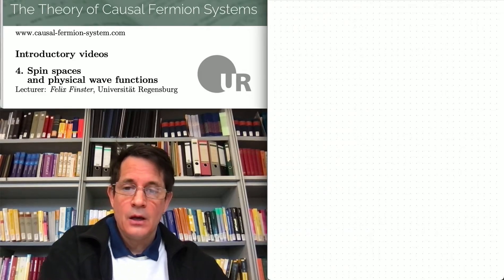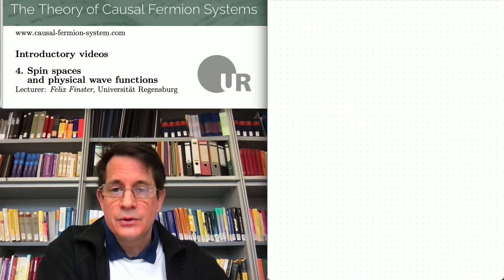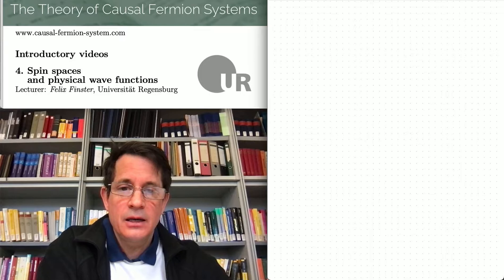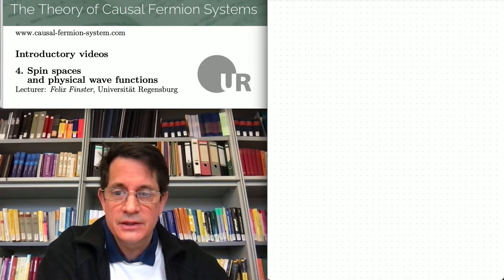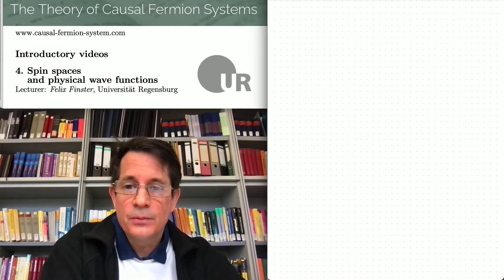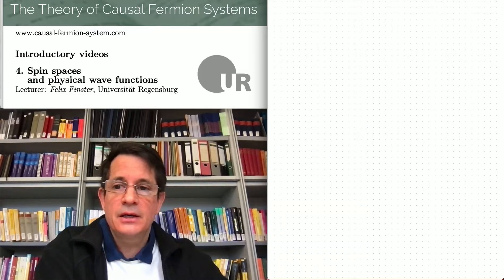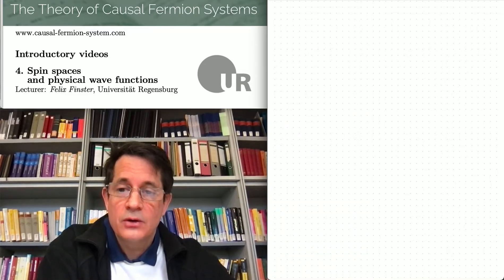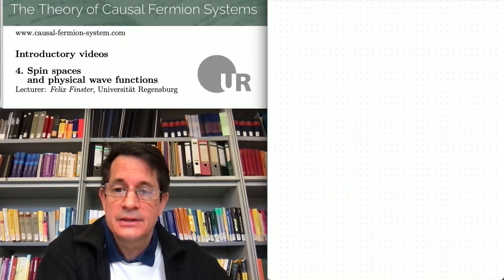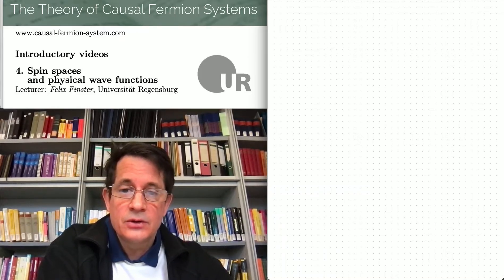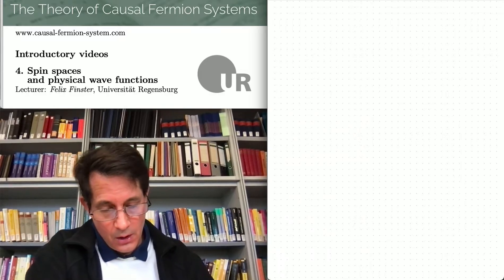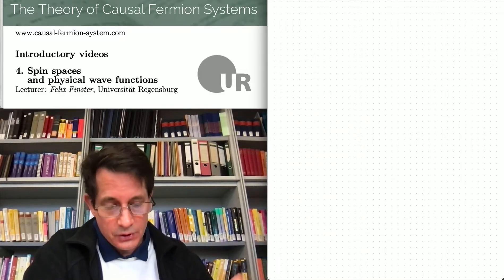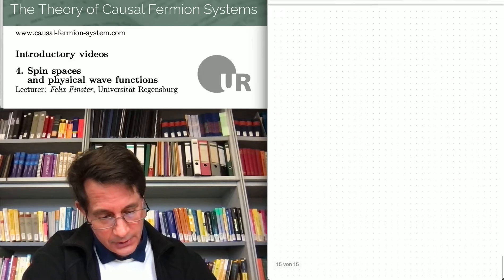Hello everybody! In my first video I told you that a causal fermion system describes a space-time together with many structures therein. Now I want to be a bit more specific and tell you in which sense a causal fermion system contains spinners and contains wave functions.